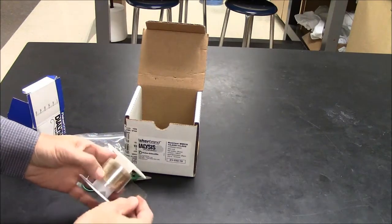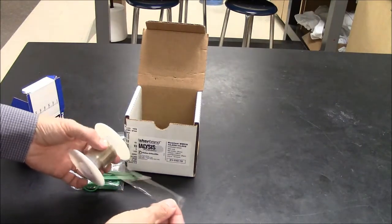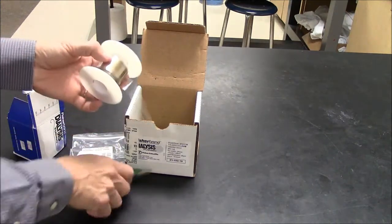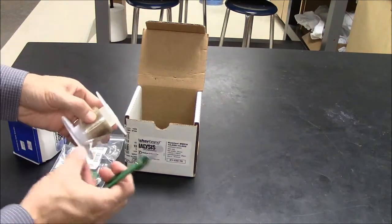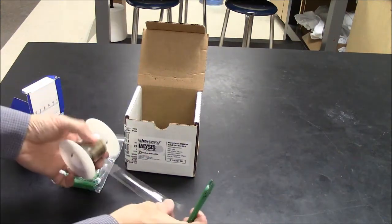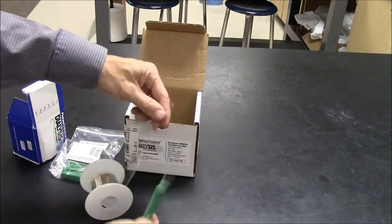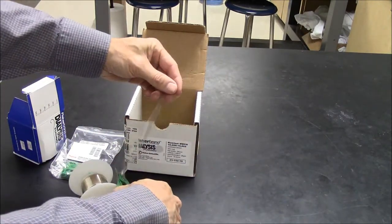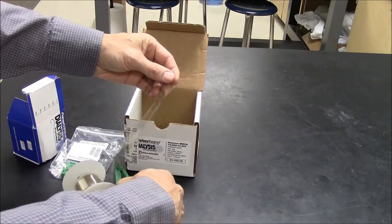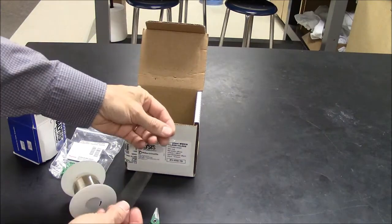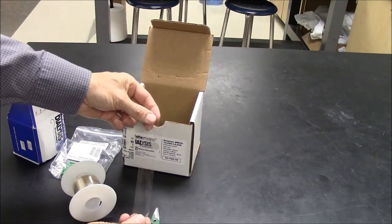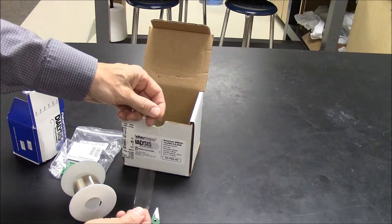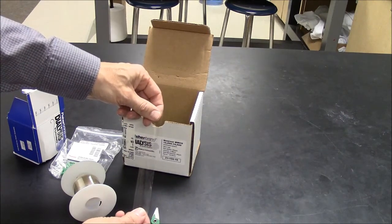Dialysis tubing is on a spool. Looks like cellophane. Typically, you want to cut a length longer than you think you need because it will make the clipping easier. So this is a suitable length of dialysis tubing for a reasonable volume, one to three or four milliliters.